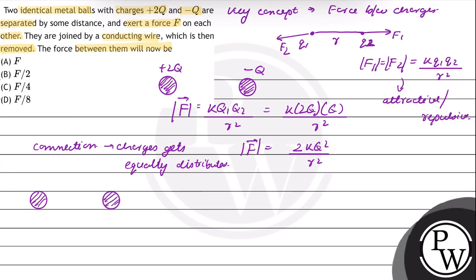That is 2Q minus Q, so the net charge will be Q. Q charge will be divided between the two of them. So this will be equal to Q by 2.